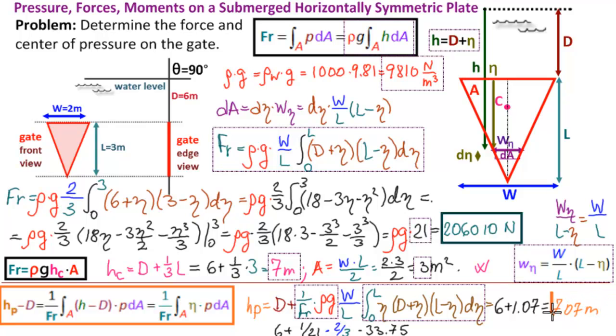Notice that's not very much deeper than the centroid itself. So if this is the centroid, our center of pressure is actually very close to the centroid. So finally, our resultant force is 206,010 newtons, and our depth to the center of pressure is 7.07 meters. And that, as they say, is that.